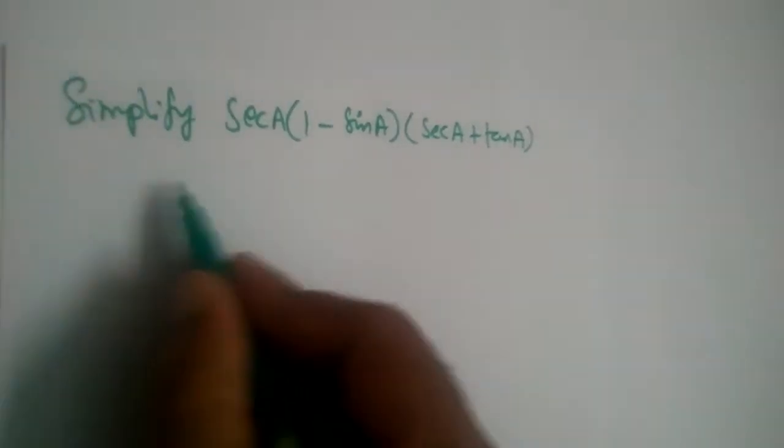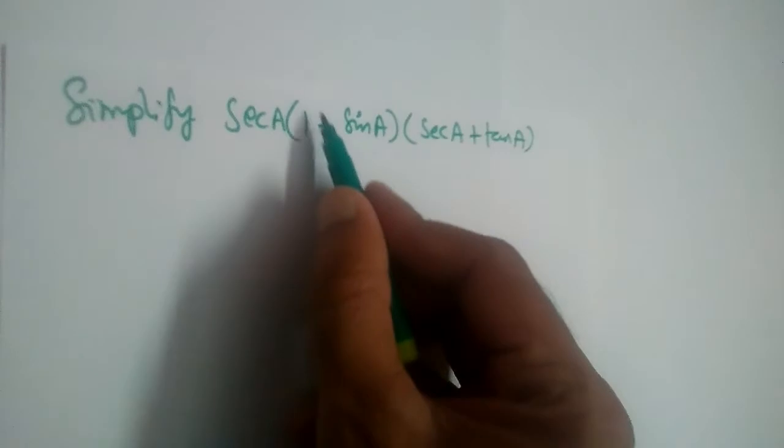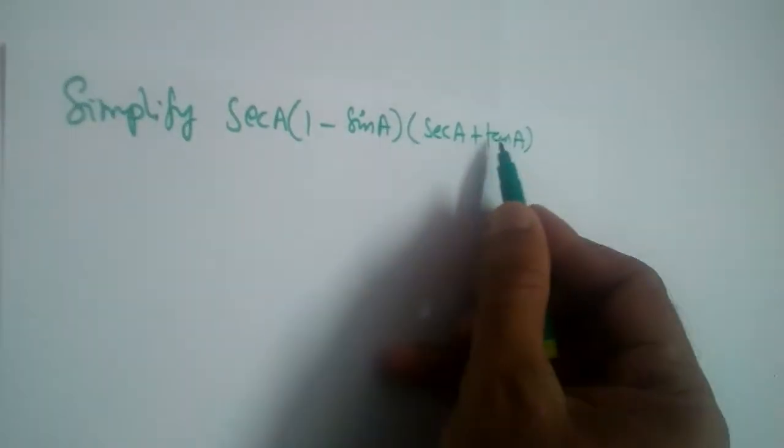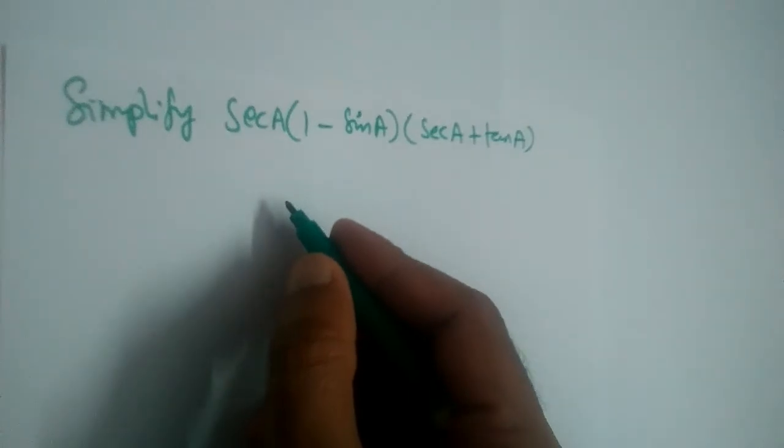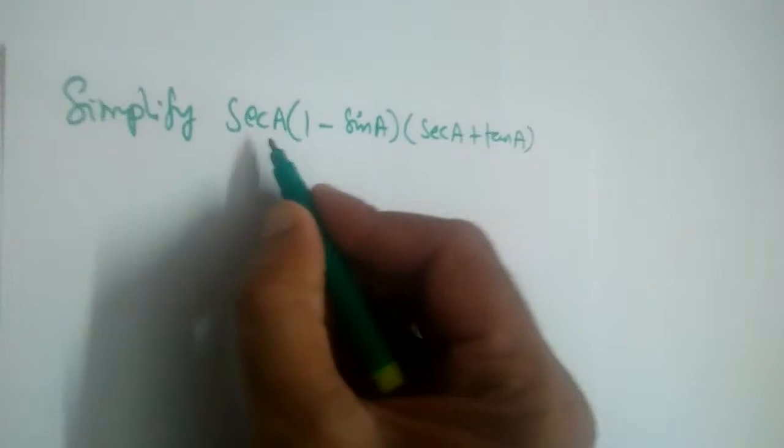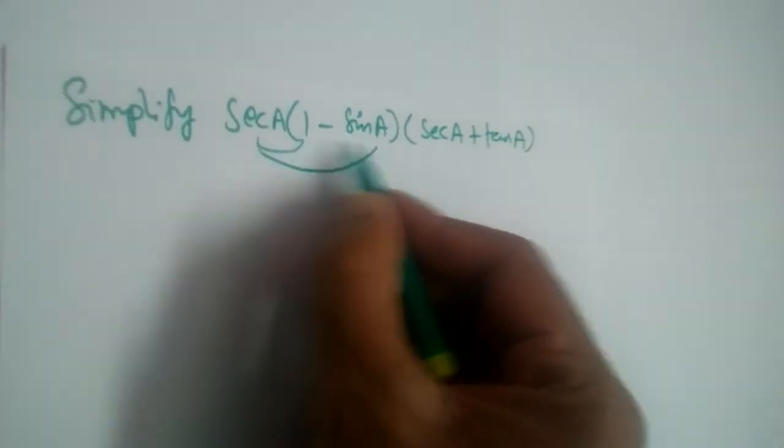We have a problem: simplify secant A times (1 minus sin A) times (secant A plus tan A). So how should we simplify this? Let us multiply these two - secant A with 1, secant A with sin.